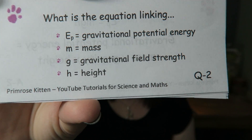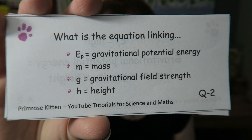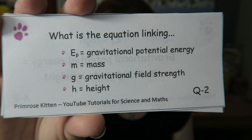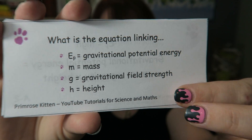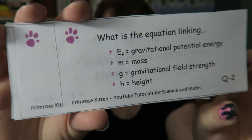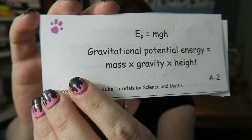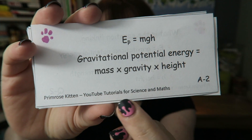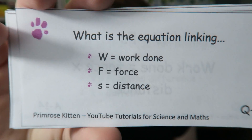What is the equation linking gravitational potential energy, mass, gravitational field strength, and height? Gravitational potential energy equals mass times gravity times height.